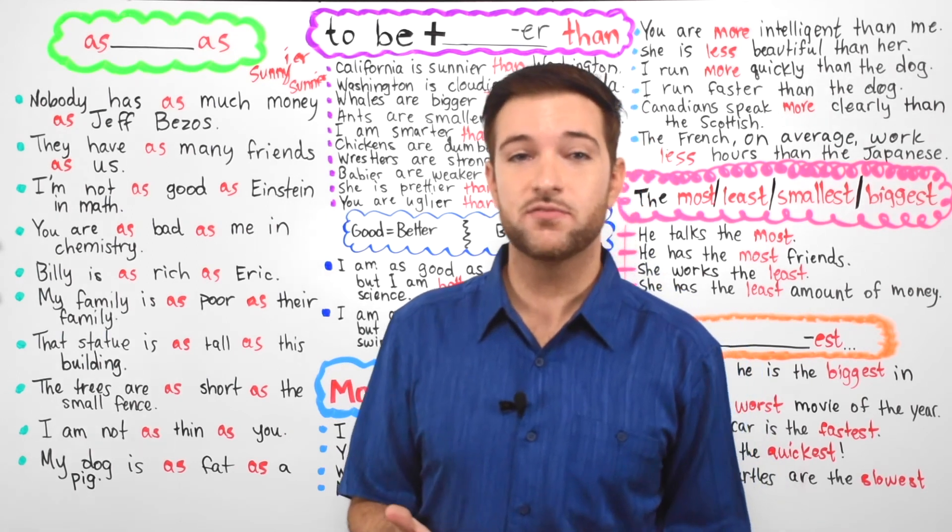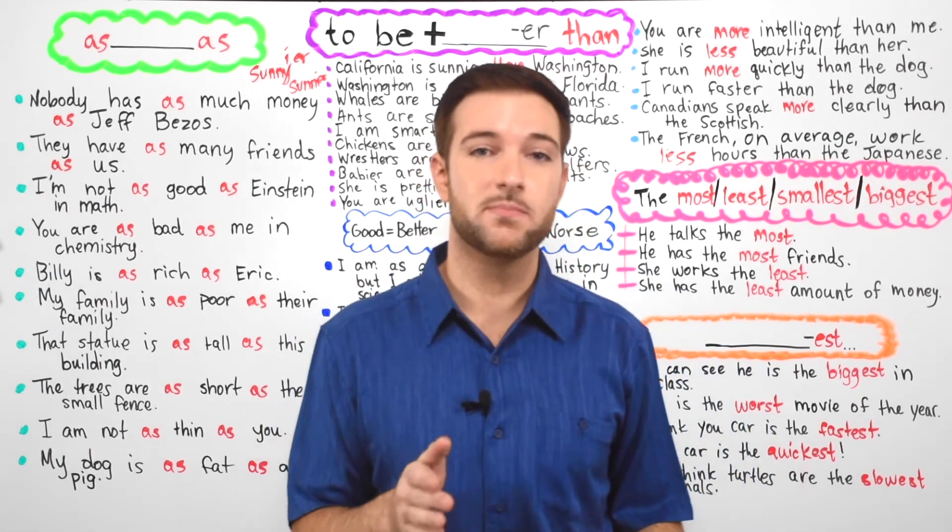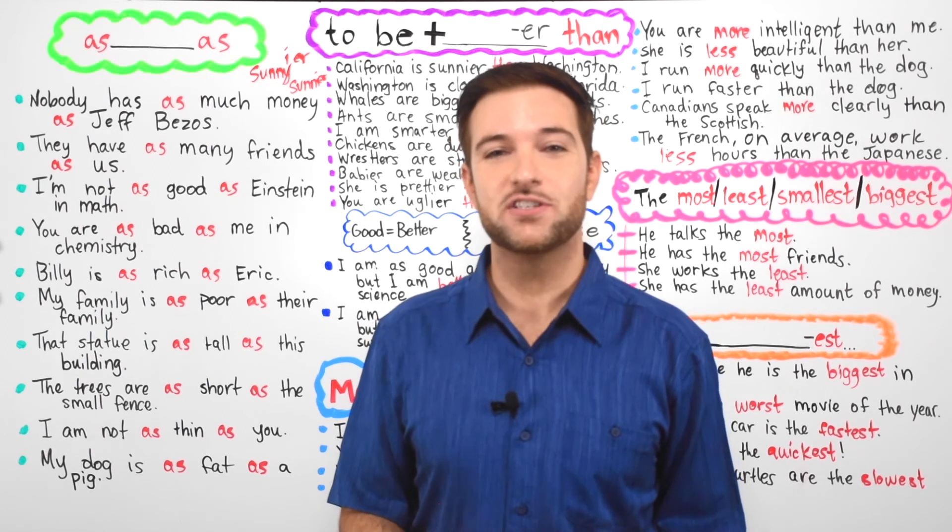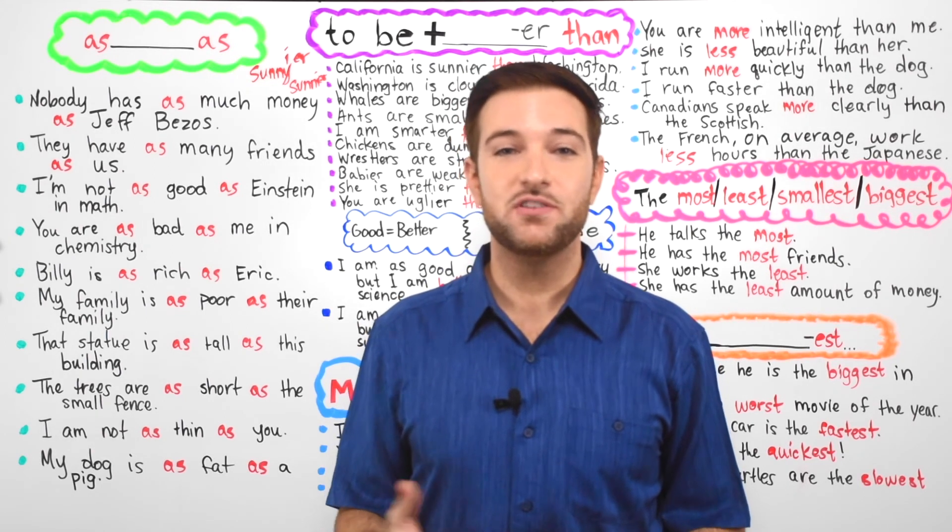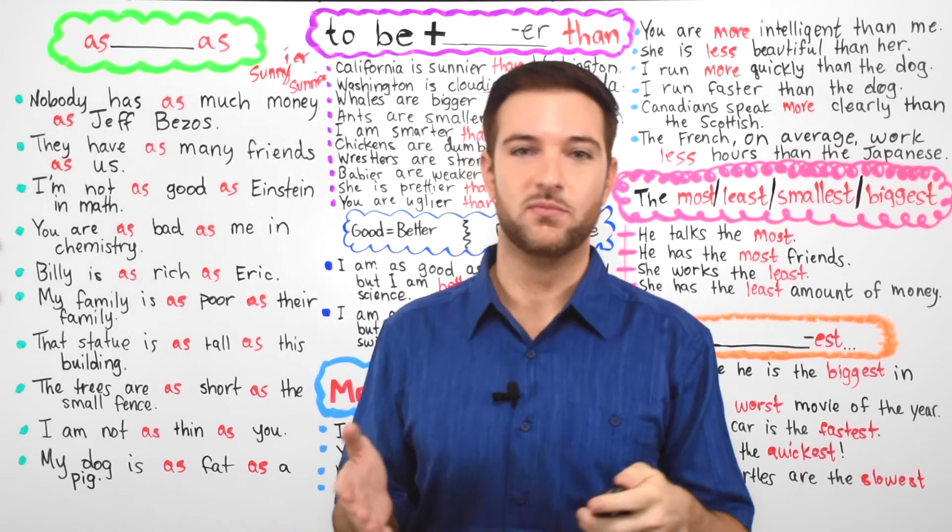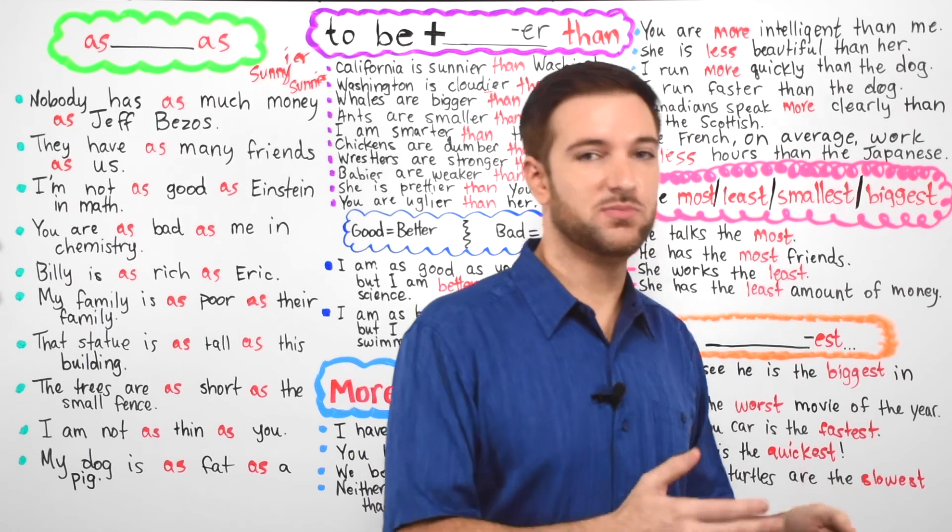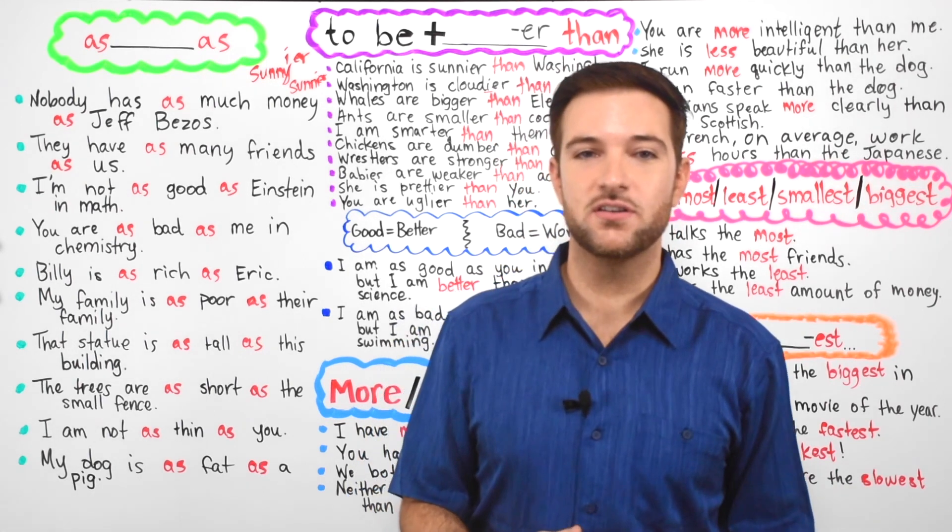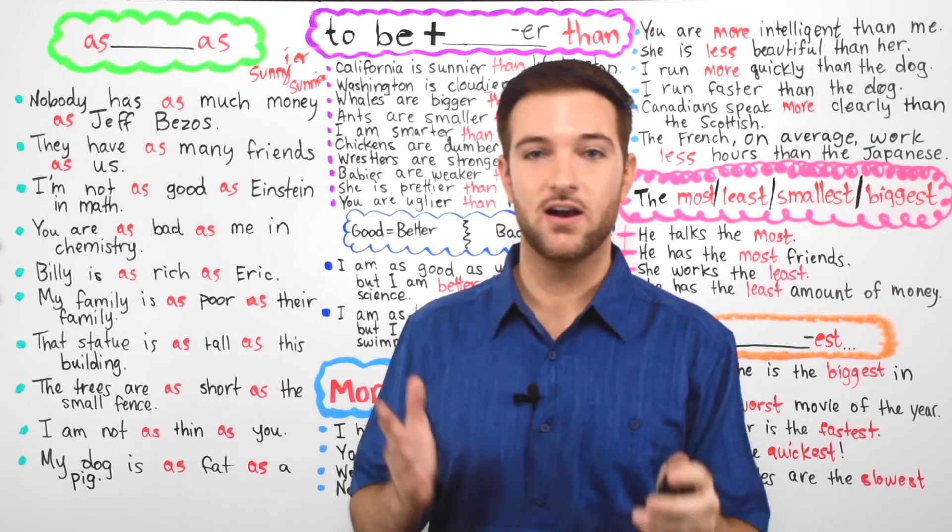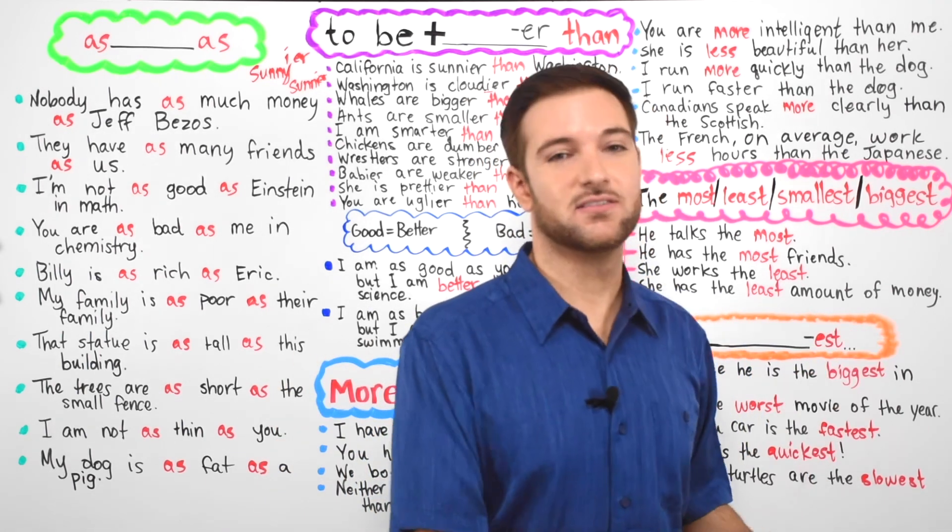Well, guys, I hope it wasn't too complicated for you today. Remember to practice the comparative and superlative forms with each new adjective that you learn. So if you learn an adjective like beautiful, you know that it's beautiful, more beautiful, and the most beautiful. And if you learn a word like ugly, it would be ugly, uglier, and ugliest.